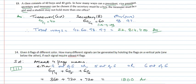Good morning friends, now we are starting with question number 13 of exercise 7.2. A class consists of 60 boys and 40 girls. In how many ways can a president, vice president, secretary, and treasurer be chosen if the secretary must be a boy?